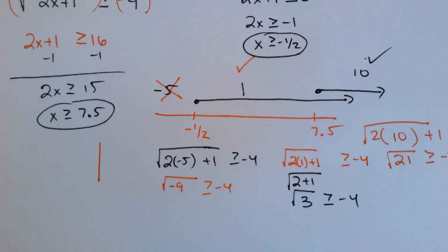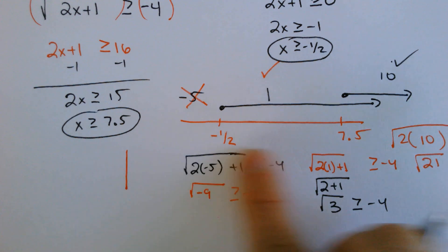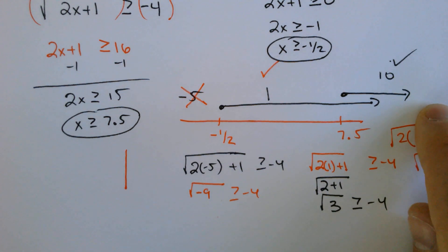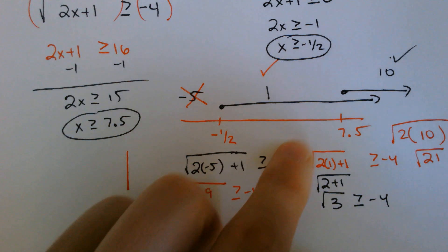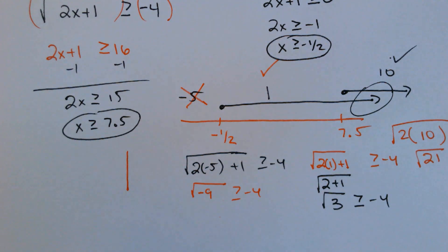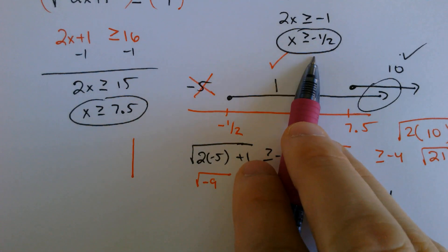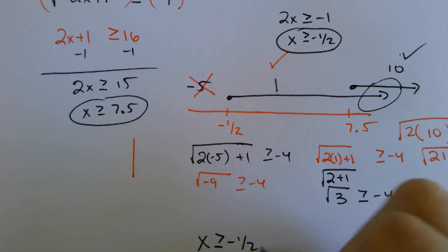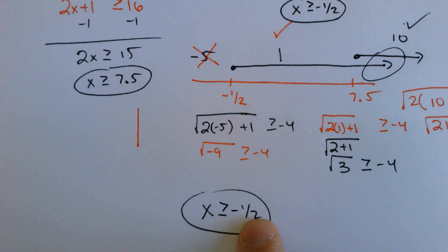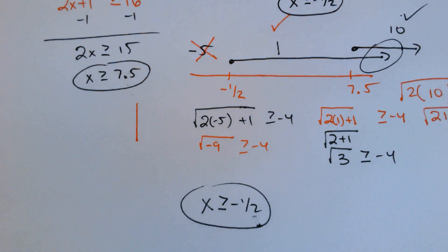So how are we going to write our answer? We can't just say greater than negative 1.5 and greater than 7.5, because both of those are overlapping and share the same area. The one answer you would actually say is x is greater than or equal to negative 1.5, because that incorporates the 7.5 as well. So it's a little tricky, but it is true.